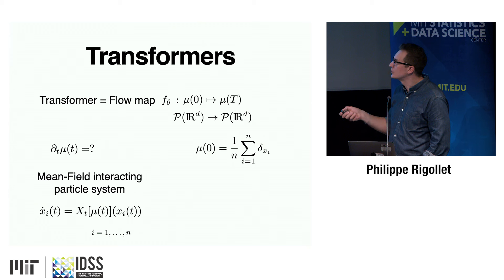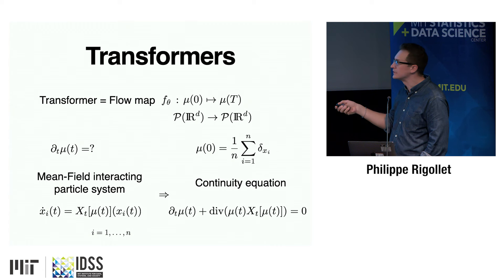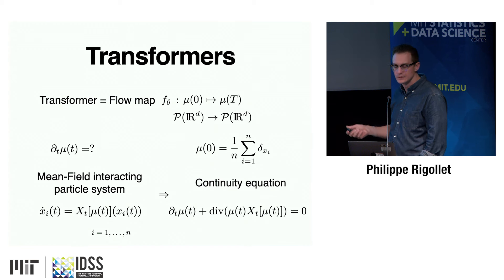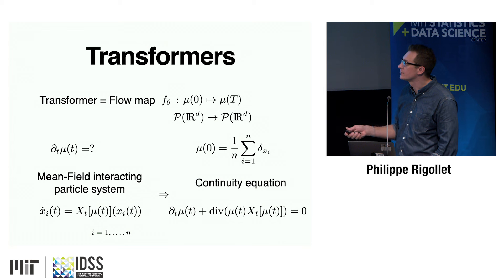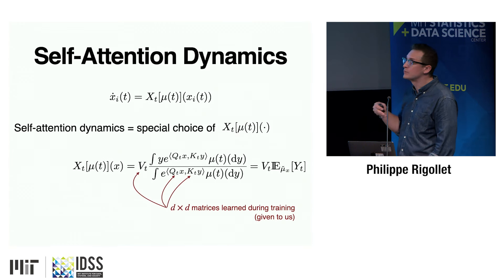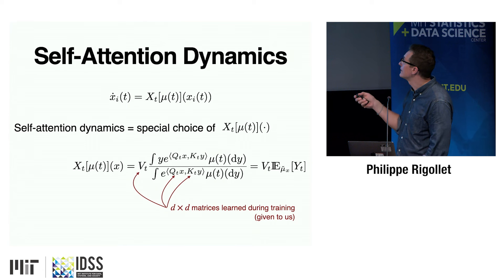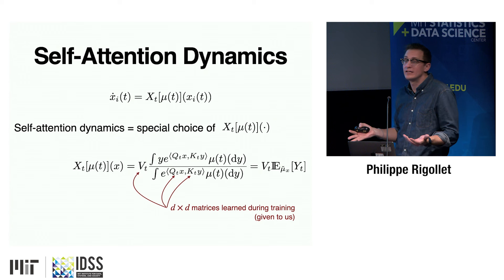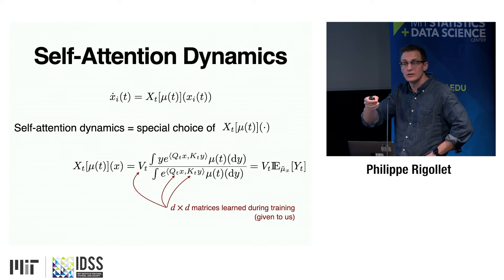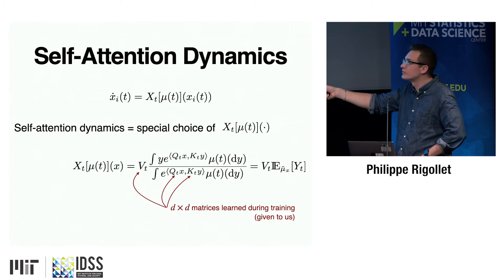Now I told you how each token moves. You want to know how the distribution moves — that's a standard exercise. You plug this velocity field into what's called the continuity equation: ∂_t μ_t = −div(μ_t · X_t(·, μ_t)). So what are transformers doing? They're picking a special choice for this velocity field — what I'll call self-attention dynamics. The special choice has three parameters trained in the lab: V_t (the value matrix), Q_t (the query matrix), and K_t (the key matrix).